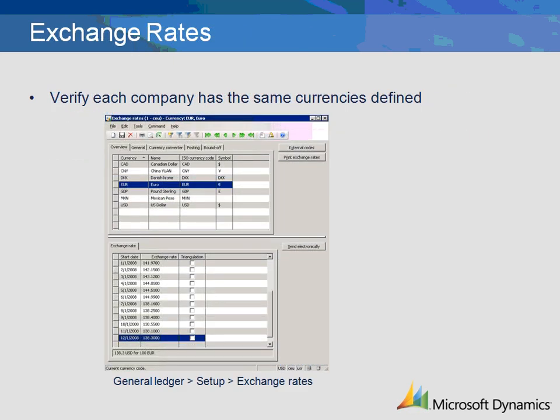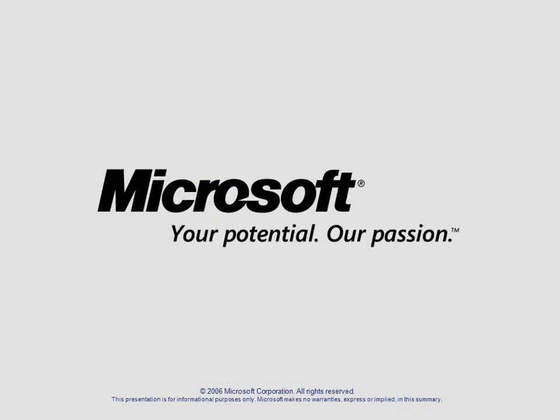In the exchange rate maintenance of the General Ledger, verify that each company has the same currencies defined. Once these setups have been completed in each company, you are ready to enter intercompany transactions.